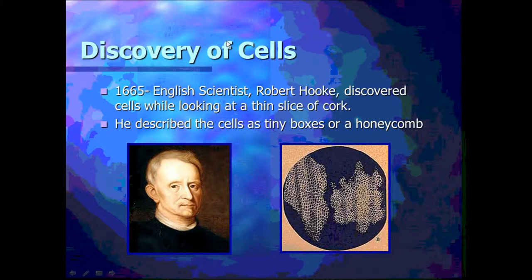First up we have Robert Hooke, and I like to think of him as the scientist that got us hooked on cells — because he was the first person to discover cells. The type of cell he looked at was a cork cell. You may have heard of cork used to stopper a wine bottle. Cork is actually the dead part of a tree, so the cells he observed were dead cells. He took some cork, sliced it with a razor, and put it under the microscope.